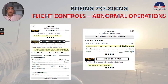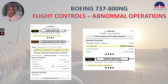MACH trim fail: limit airspeed to 280 knots, Mach 0.82. Speed brake — do not arm. Do not arm the speed brake for landing manually; deploy the speed brakes immediately upon landing. On the landing checklist it says speed brake down detent. The speed trim fail non-normal checklist says: continue normal operation.